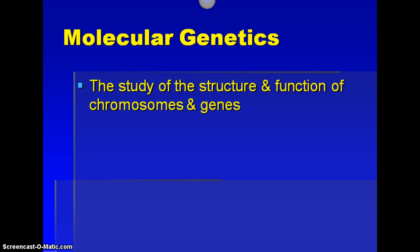First we're just going to take in some definitions. If you're using your notes packet, we are just below the Law of Independent Assortment and Law of Segregation section where it says key definitions. Right above the key definitions, it says molecular genetics — the study of structure and function of chromosomes and genes. So basically, we're looking at the genes themselves and what is specifically there at that gene level.